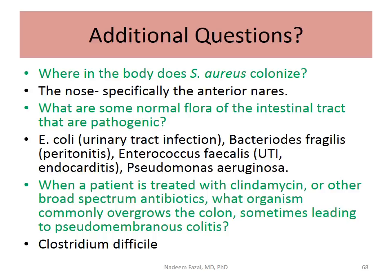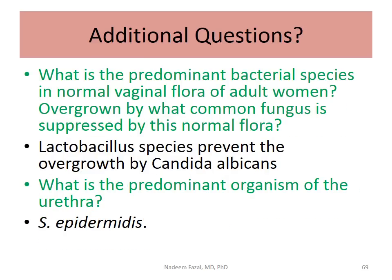When a patient is treated with clindamycin or other broad-spectrum antibiotics, what organism commonly overgrows in the colon, sometimes leading to pseudomembranous colitis? As discussed earlier, changing the ratio between good and bad bacteria leads to overgrowth of Clostridium difficile. What is the predominant bacterial species in normal vaginal flora of adult women, and what common fungus does it suppress? Lactobacillus species are protective and prevent overgrowth of Candida albicans. If that balance is disturbed, females may develop candida vaginitis or candidiasis.